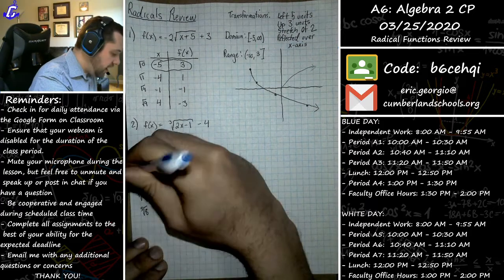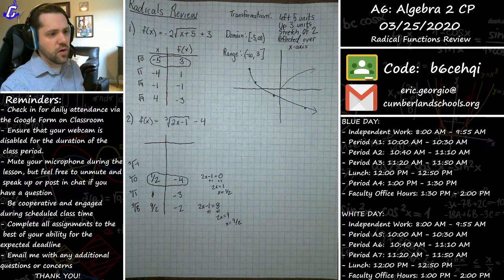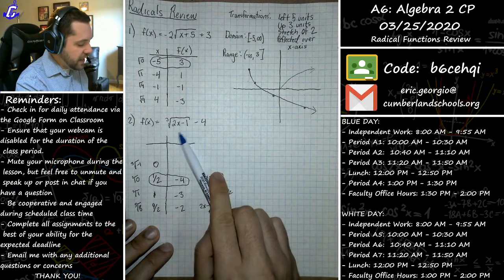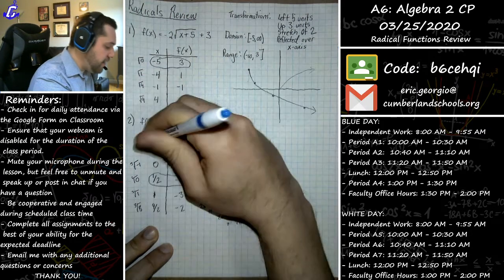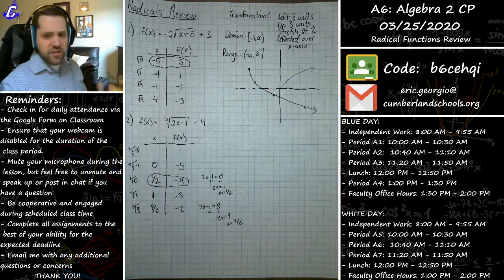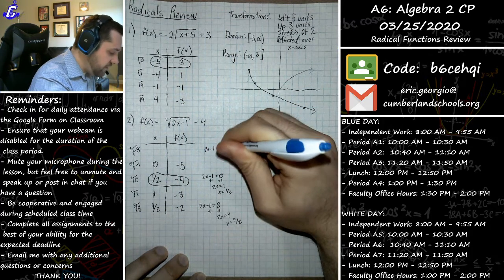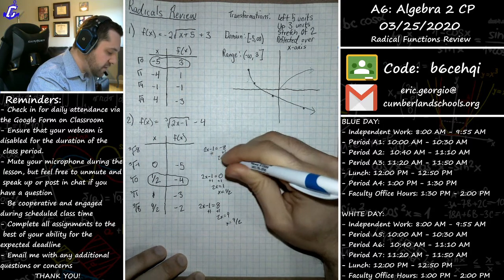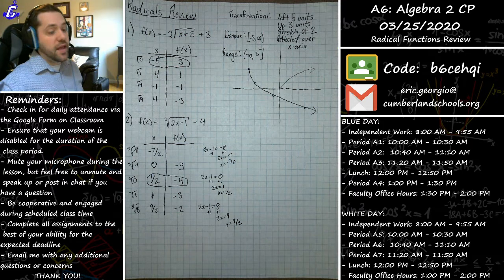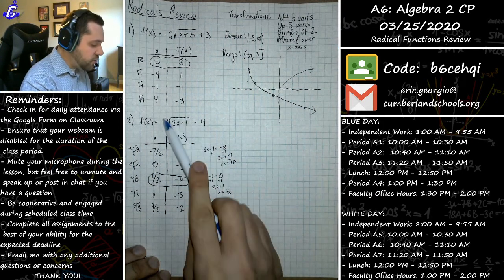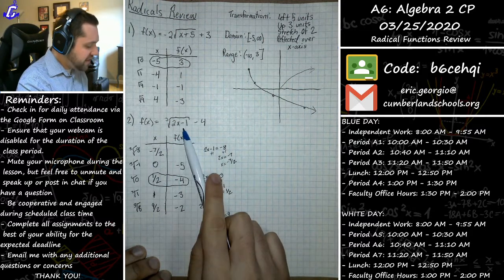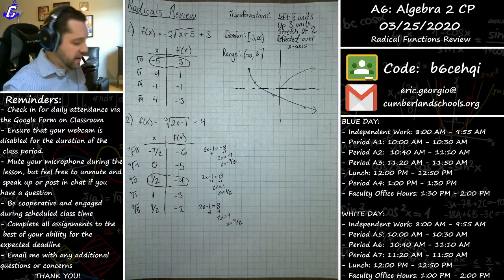Extending in the negative direction, for the cube root of negative one: two times zero is zero, minus one is negative one, cube root of negative one is negative one, minus four is negative five — giving the point (0, -5). For the cube root of negative eight, solve 2x - 1 = -8: add one to get 2x = -7, divide by two — x = -7/2 or -3.5. The cube root of negative eight is negative two, minus four is negative six — giving the point (-3.5, -6).